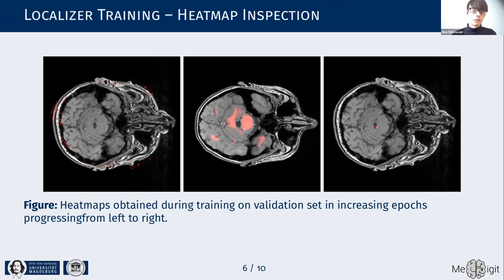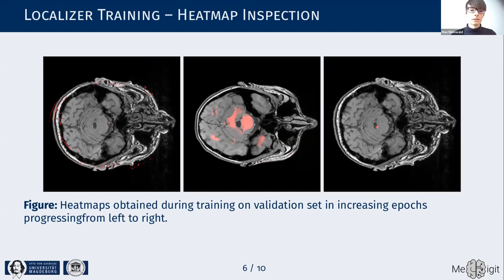At first, the network learns to highlight structures that correlate with the LC. On the left, it segments some parts of the skull that, when you apply the scalar product, collapse to a coordinate roughly in the middle of the brain where the LC is located. Then as training progresses, the network learns to focus on parts of the brain before finally collapsing to the locus ceruleus itself.